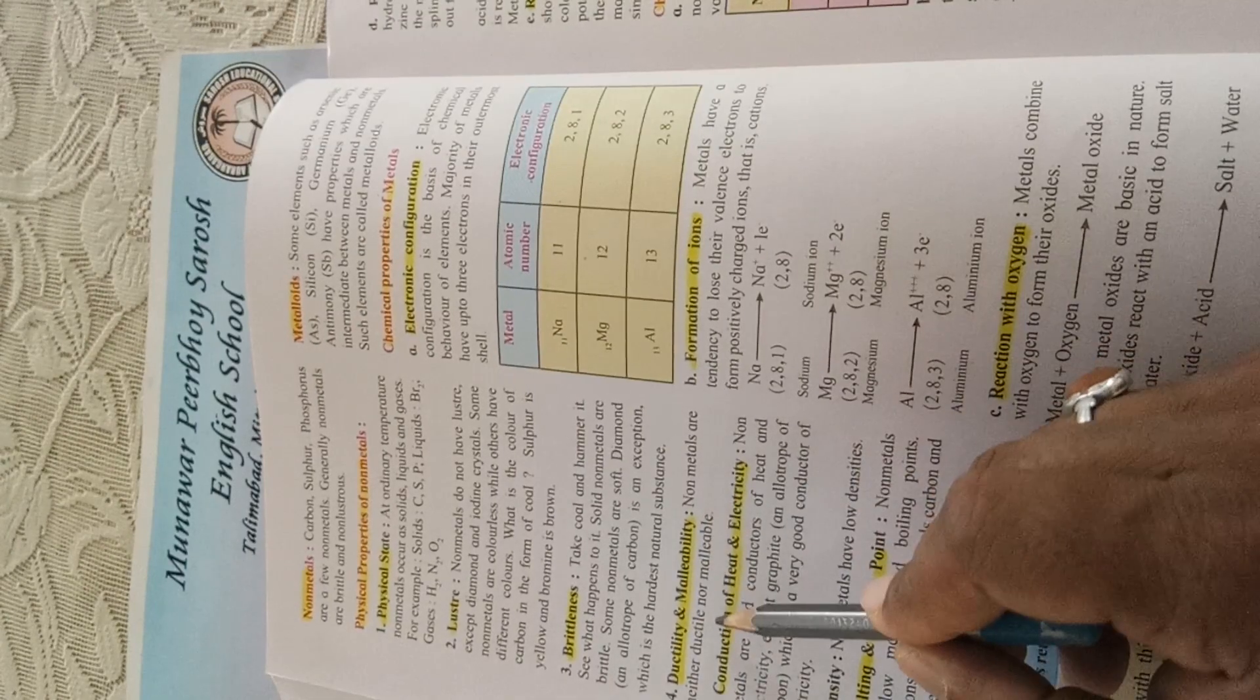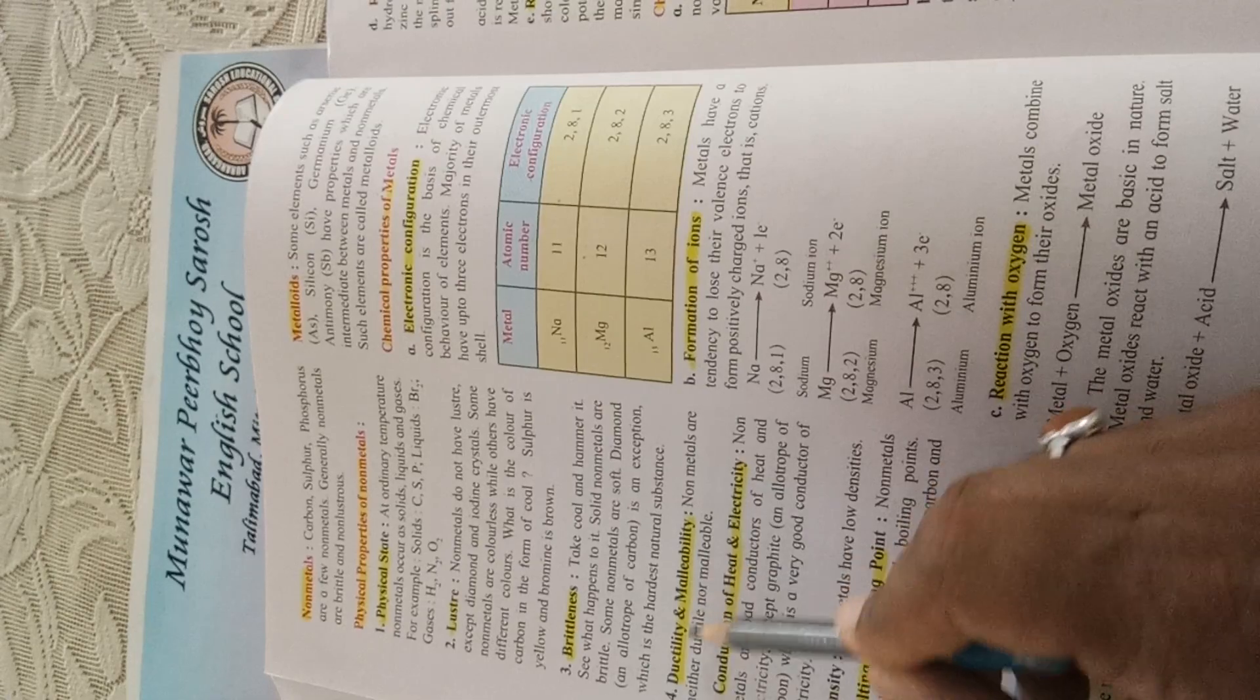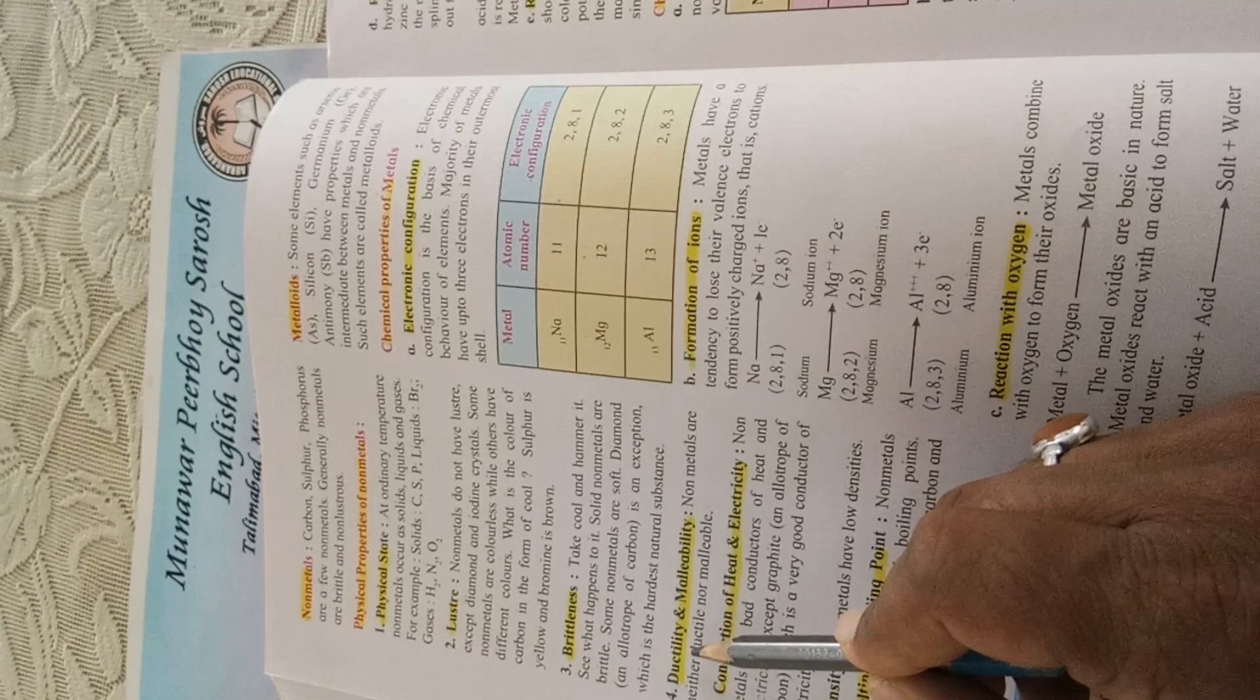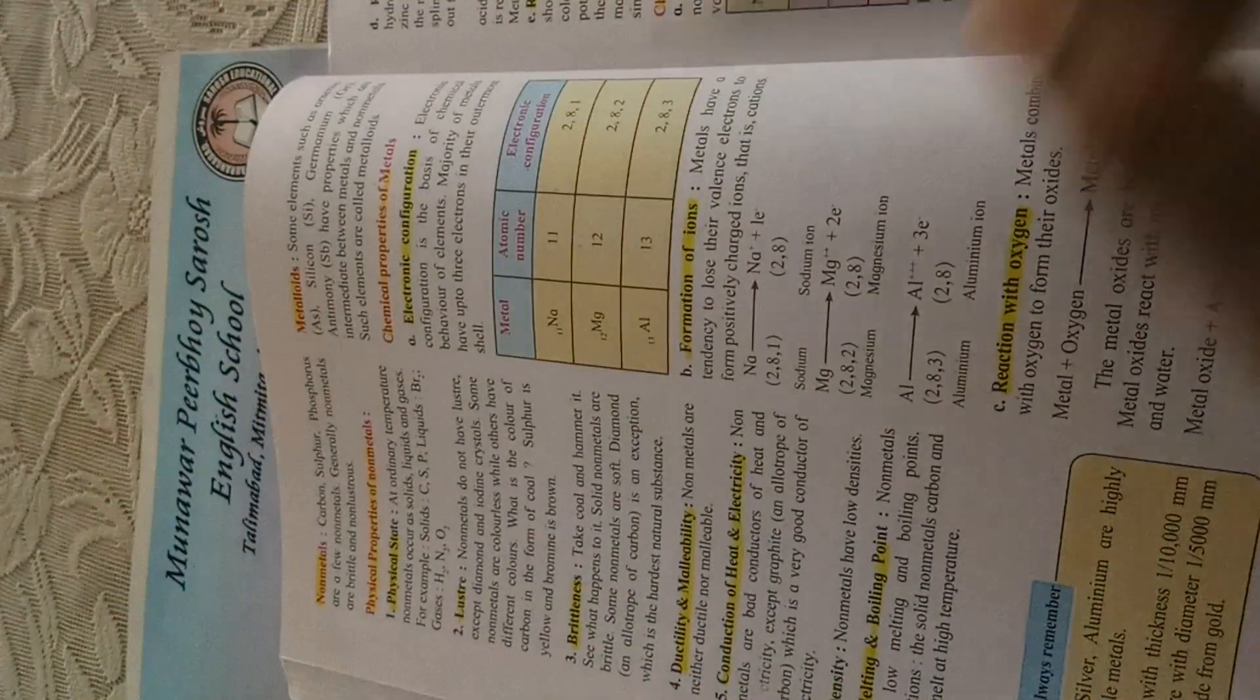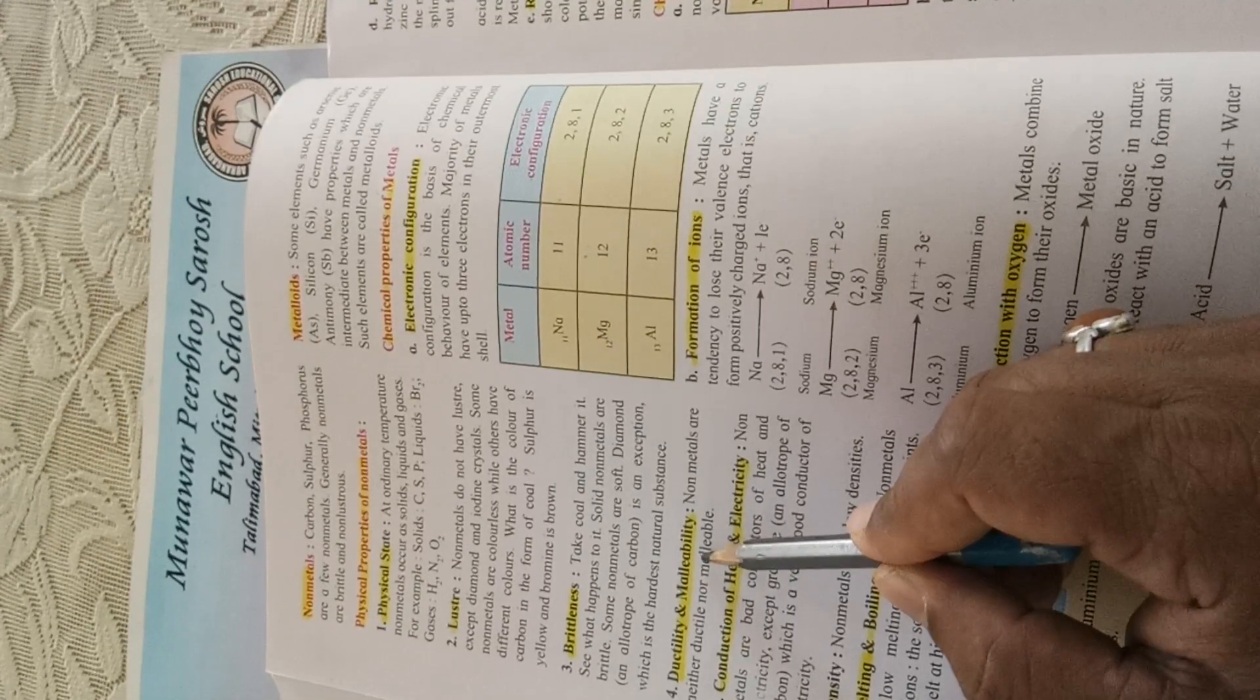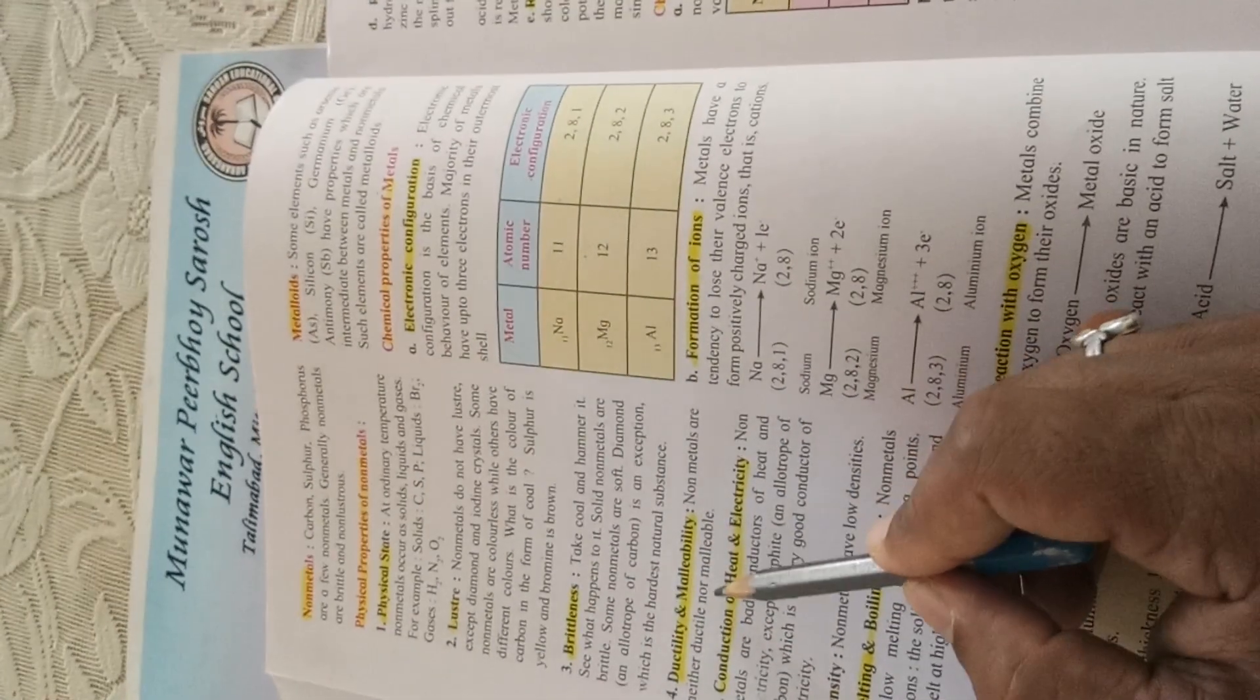Nonmetals are neither ductile nor malleable. We have seen the meaning of ductility and malleability under the properties of metals. Ductility means metals can be drawn into a wire, but nonmetals cannot be made into wire. Malleability means sheets can be made from the material. As nonmetals are brittle in nature, they are non-malleable and non-ductile.